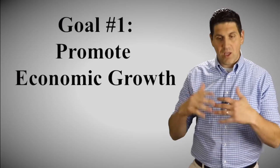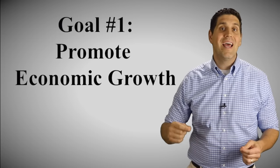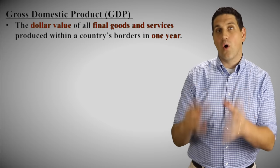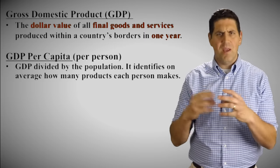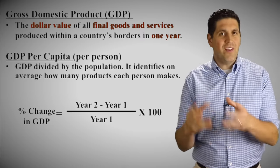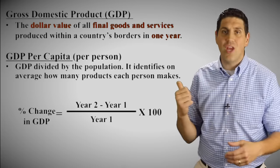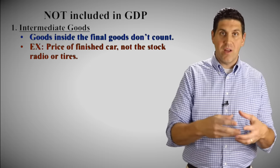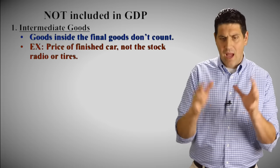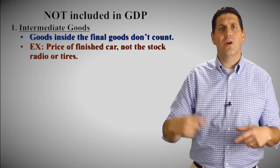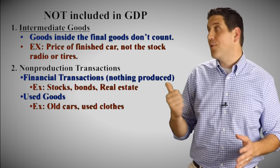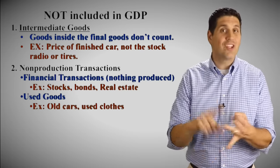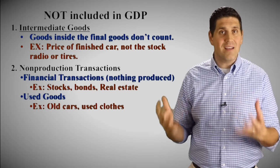It starts with the idea of growth. The most important concept, probably in the entire course, is GDP — gross domestic product. It's the dollar value of all final goods produced in a year within a country's borders. You should also understand GDP per capita, which is GDP divided by population, and be good at calculating percent change. When it comes to GDP, it's important to know what's not included: intermediate goods — which go into the production of a final good — are not counted, only the final good. We also don't count non-production transactions like stocks and bonds, and we don't count non-market transactions like illegal goods or illegal labor.